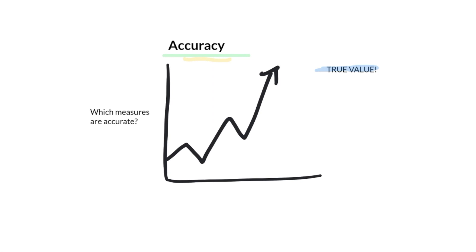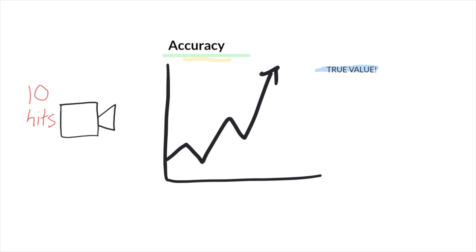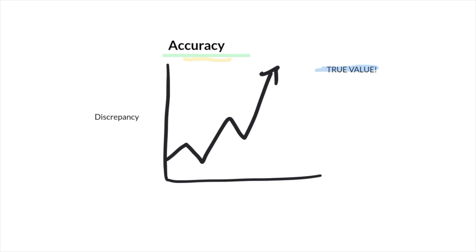One way to do this in a real life example is to video record sessions with your clients, then go back and check your accuracy or your data collection. So if you have a kid that exhibited 10 head hits in an hour period, you may go back and watch the video to recount the head hits to see if that in fact matches the true value. If you go back and count and it's 11 or 9, there's a discrepancy and that yields inaccuracy.